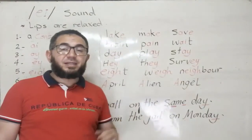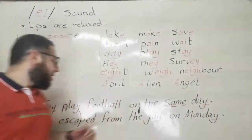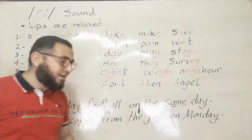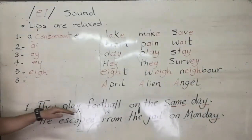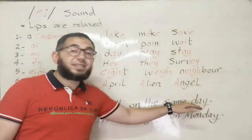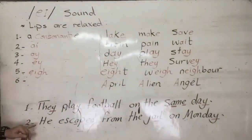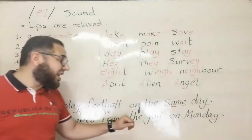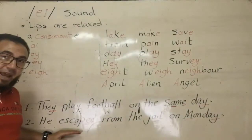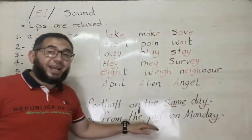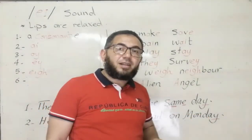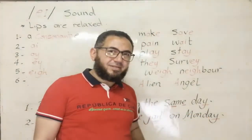So let's break two sentences which have the sound A in it. First: they play football on the same day. Second: he escaped from the jail on Monday. Notice the A sound in escaped, jail, and Monday.